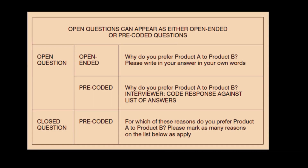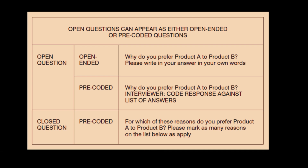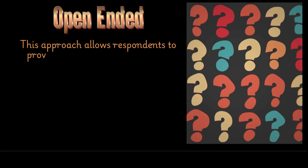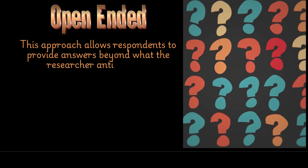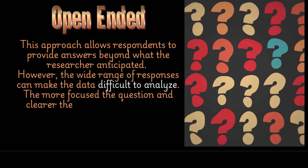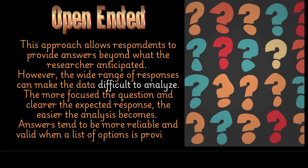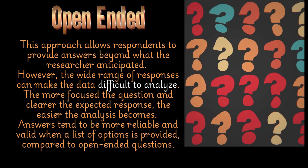There could be open-ended questions or closed-ended questions. Open-ended questions are like: 'Why do you prefer product A to product B? Write answer in your own words.' In a pre-coded open question, the interviewer has provided codes for the products. The closed question has a list of options which the respondent has to choose from. The open-ended approach allows respondents to provide answers beyond what the researcher anticipated; however, the wide range of responses can make the data difficult to analyze. The more focused the question and clearer the expected response, the easier the analysis becomes. Answers tend to be more reliable and valid when a list of options is provided.